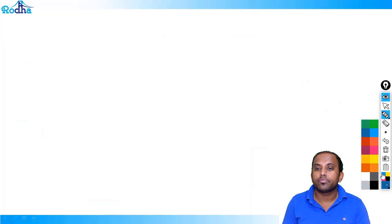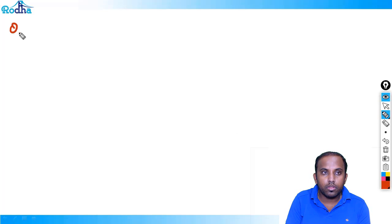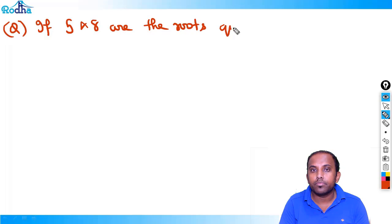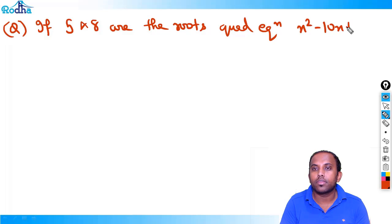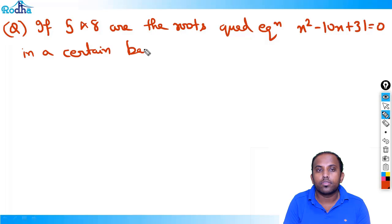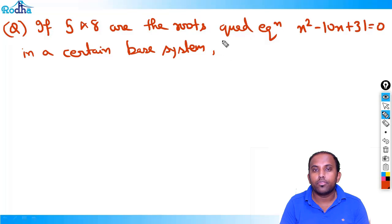Next question: if 5 and 8 are the roots of a quadratic equation x²-10x+31 = 0 in a certain base system, then find the base.